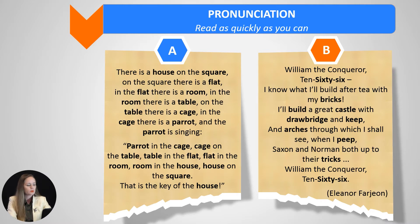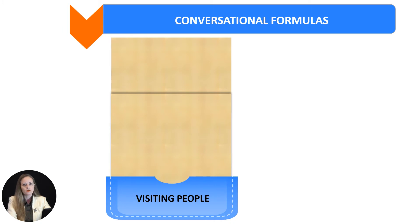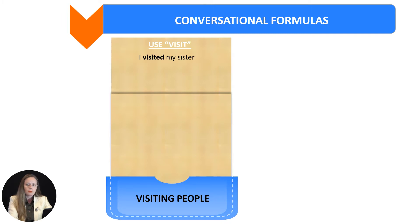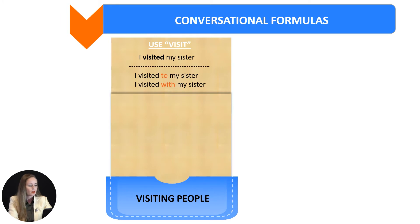We continue our topic with conversational formulas, where I invite you to learn some basics when talking about visiting people. Use "visit" — it is the simplest and most obvious way we can talk about visiting someone, like in this example: I visited my sister. Remember, don't use any preposition after visit — don't say I visited to my sister, or I visited with my sister. Visit is used for formal situations.